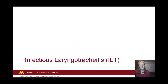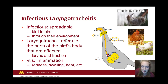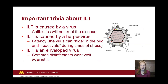First, we'll be discussing Infectious Laryngotracheitis, abbreviated ILT. Let's break down the name. Infectious means the disease is contagious and can be spread from bird to bird. Laryngotrachea refers to the parts of the bird's body that are affected — the larynx and the trachea. The larynx, also known as the voice box, is at the top of the throat. The trachea is the windpipe, going from the larynx almost down to the lungs. The last part, itis, means inflammation — redness, swelling, heat, and pain. This disease affects both layer and broiler chickens.